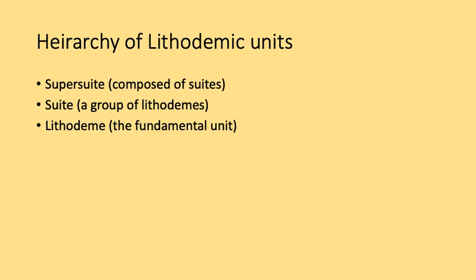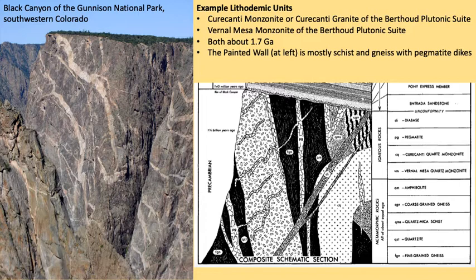A photograph of the Black Canyon of the Gunnison in southwestern Colorado shows a hard-rock setting with many Precambrian rocks. The stratigraphic details on the right show lithostratigraphic units at the very top — the Entrada Sandstone and Pony Express — while the lithodemic units below also have unconformities. The lithodemic units crosscut older lithodemic units, as shown in a photograph on the right-hand side.